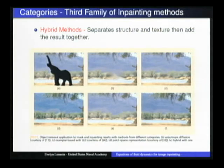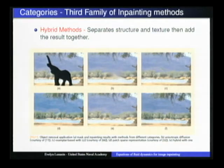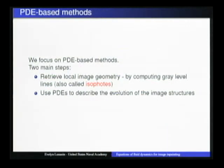The third category is a hybrid of the two: they separate the structure and the texture, fix each using two different methods, then merge the results together. Results using the diffusion technique and exemplar method are shown, and at some point it's very hard to detect the difference visually. I'll show a way to quantify inpainting quality without just using the eyeball norm.